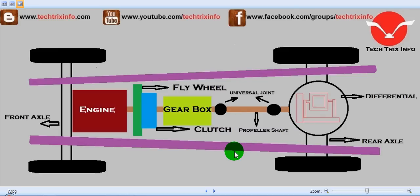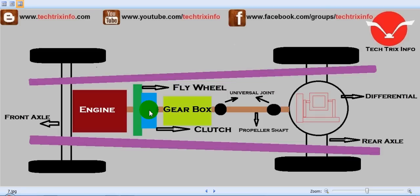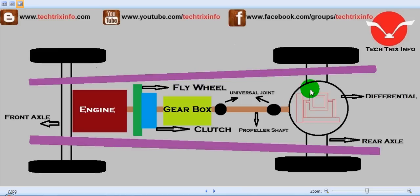This shows the complete layout of the transmission system of an automobile. The components are: the front axle, the engine or prime mover, the flywheel, the clutch, the gearbox, a first universal joint, the propeller shaft, a second universal joint, and finally the rear axle where the propeller shaft drive connects to the differential.